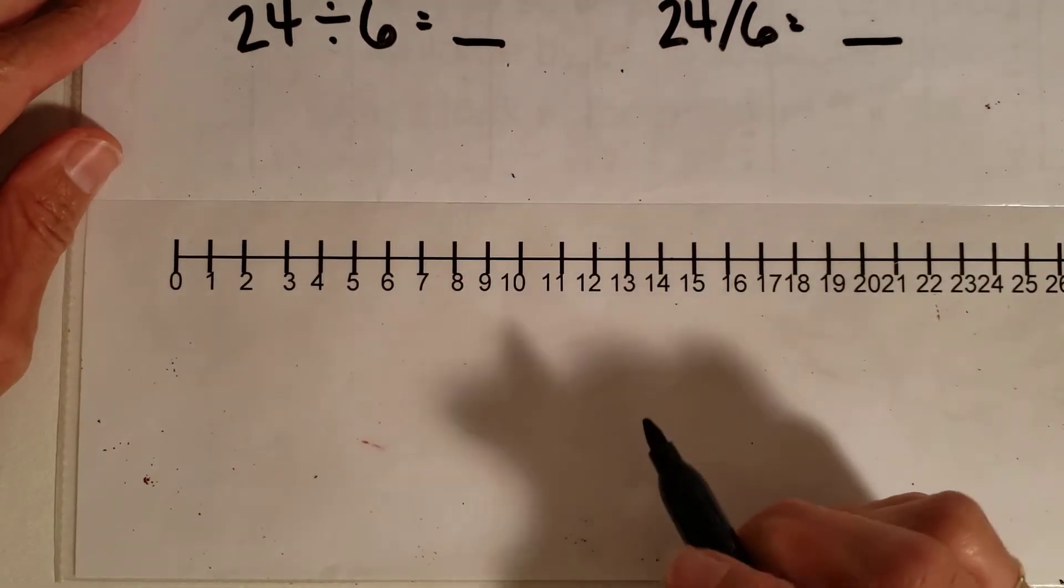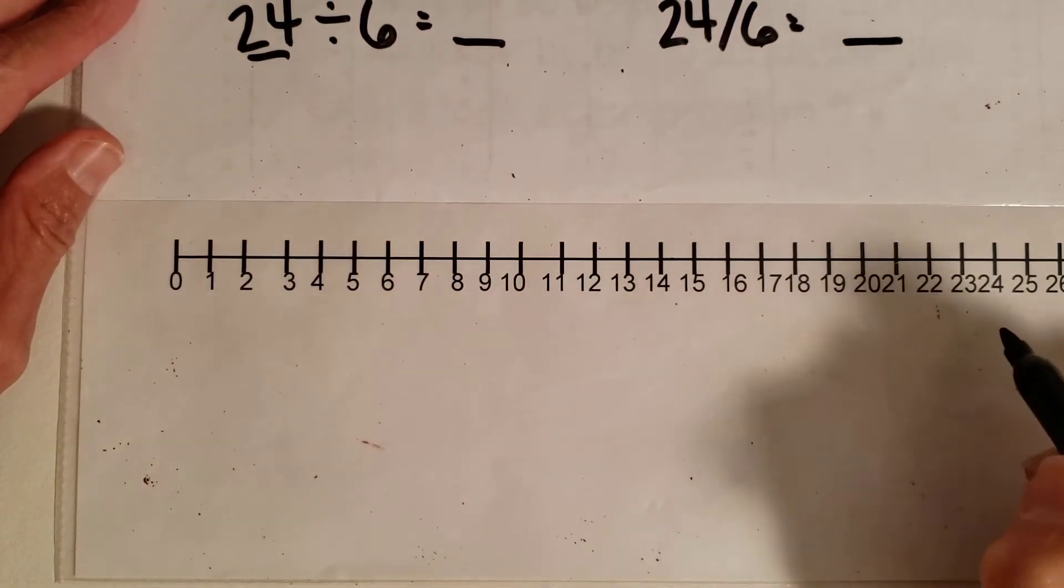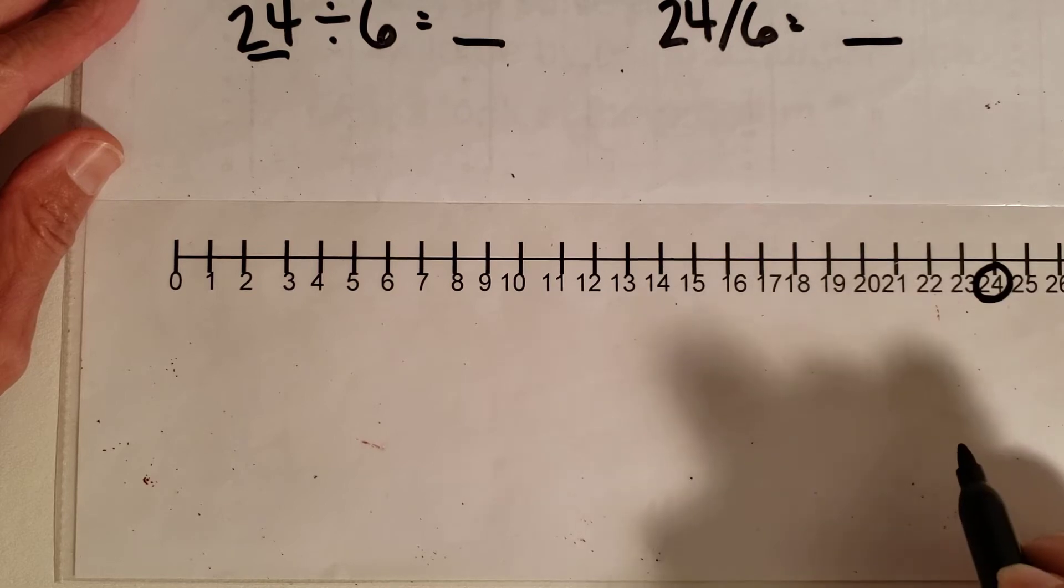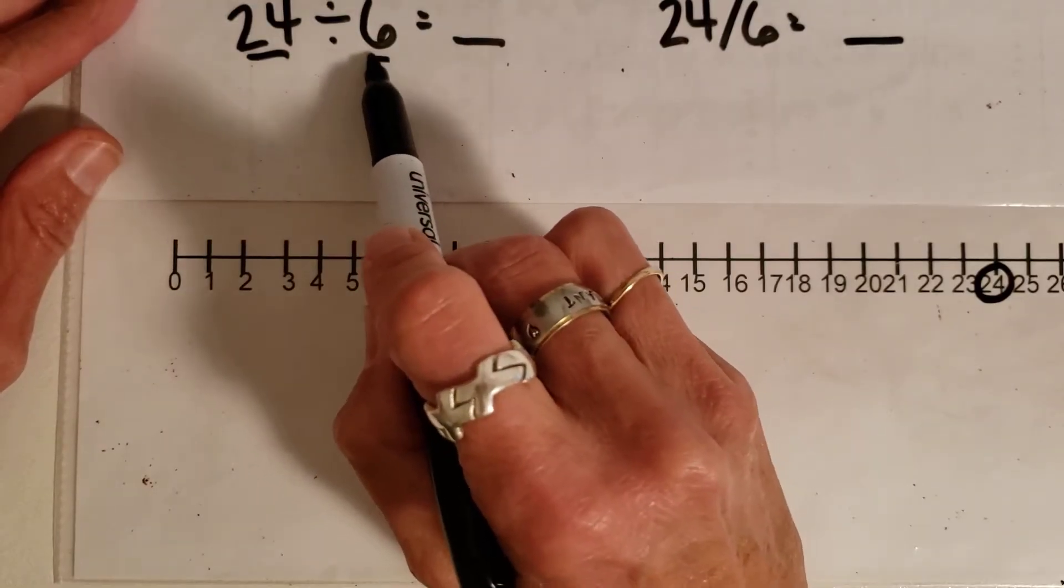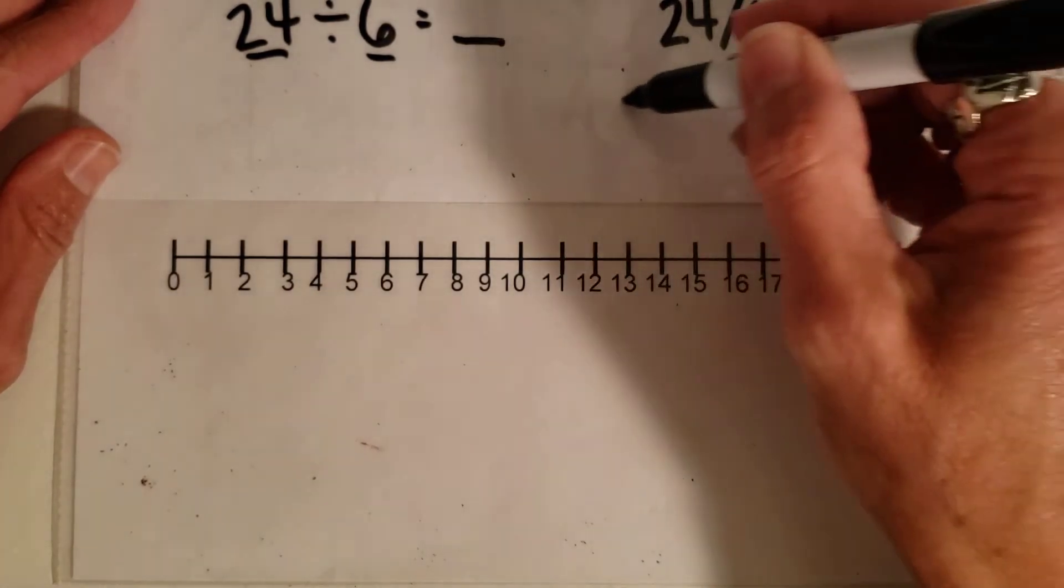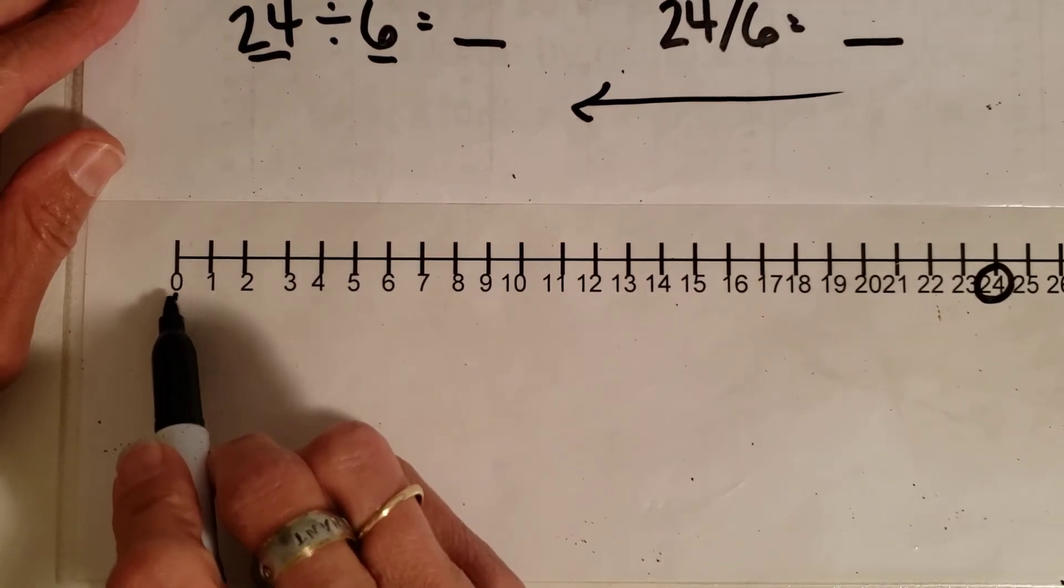Alright, do you remember what we are doing? We have our two numbers. The first number is our largest number and it's going to tell us where to start. So here's my 24 right there and this is going to tell me how big the hops are going to be. So I'm going to be going backwards because I'm trying to, my goal is to hop down here to the 0. That's my goal.